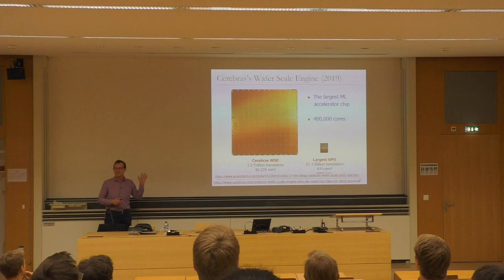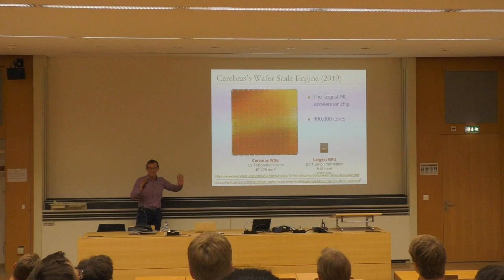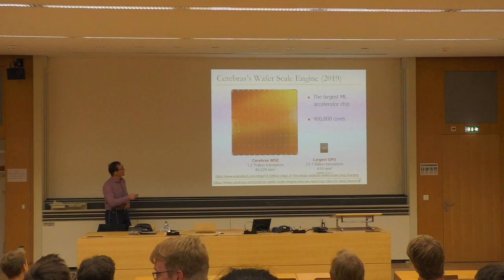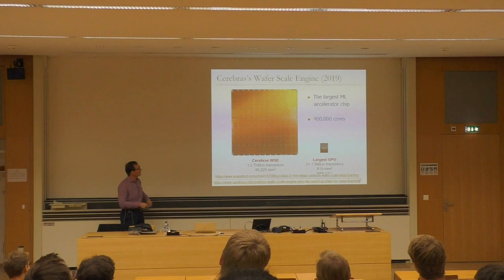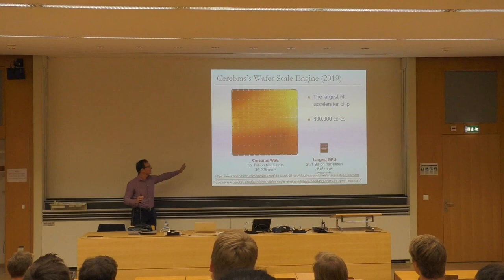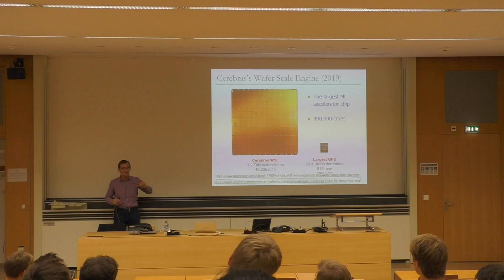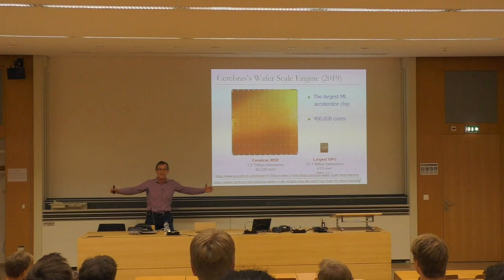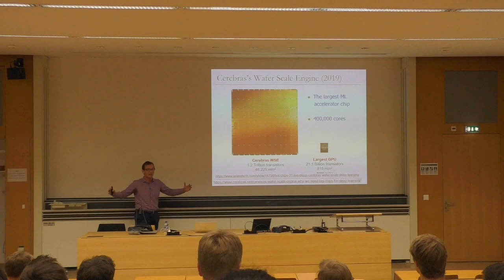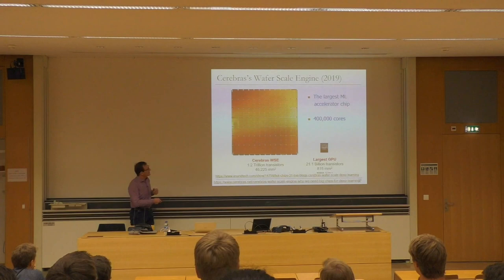Another example from 2019: this is a machine learning accelerator introduced in August by Cerebras Systems. It's a wafer-scale chip. They questioned everything and decided to go with this approach because they needed a lot of computation and a lot of memory. How do you get both in a single chip? You make the chip bigger. This wafer-scale chip has a lot of computation capability and a lot of memory. It's 1.2 trillion transistors, while the largest GPU so far has been 21 billion transistors — because we've limited ourselves to small chips.